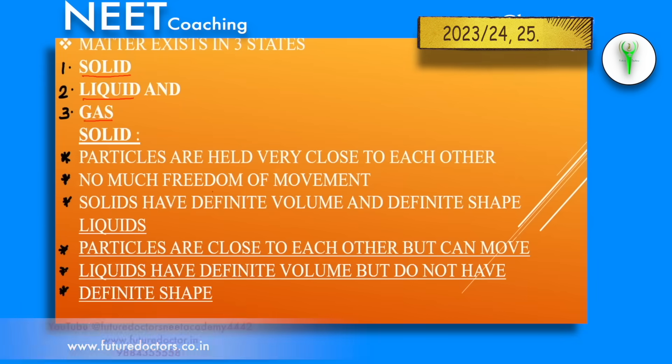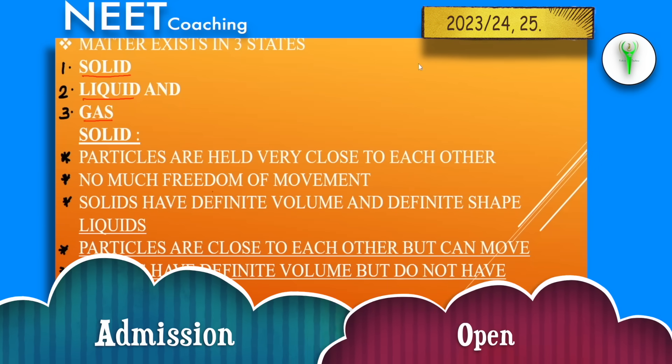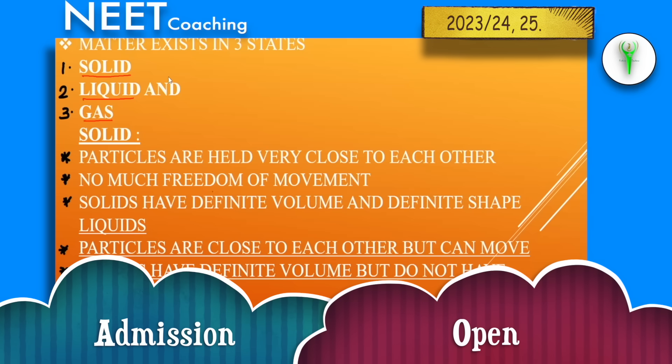What is matter? Matter is nothing but anything which occupies space and has mass. It is called matter. Matter exists in three states.